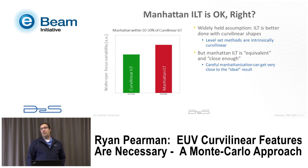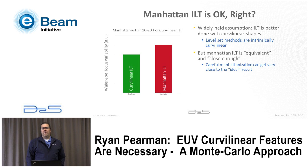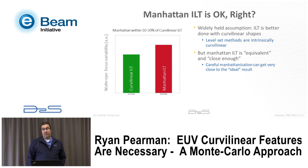It should be okay based on how the industry is behaving, but if you think about ILT it's really natively done in the curvilinear space. The only reason we're even talking about using Manhattan features is because it's the standard — we couldn't make the mask historically. The industry has convinced itself that Manhattan ILT will get you close enough to the ideal solution, and simulations in the wafer space show that's the right answer.